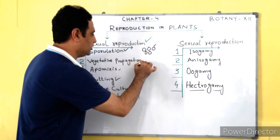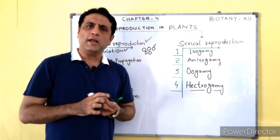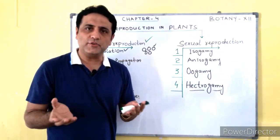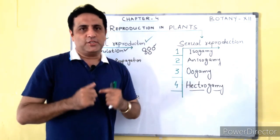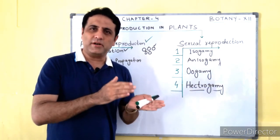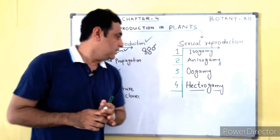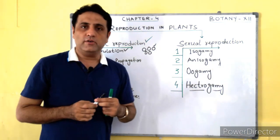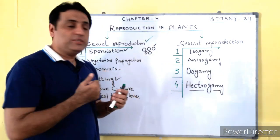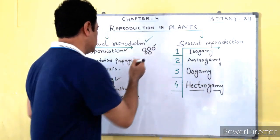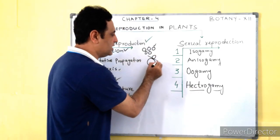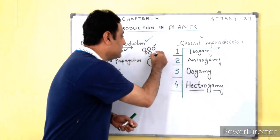The second type is vegetative propagation. When any plant part is separated from its parent plant and grows into another individual, this is called vegetative propagation — meaning any stem, root, leaf, or bud is separated from the parent plant and grows into another individual. For example, the potato is an example of vegetative propagation, in which a small bud is present on the outer surface of the potato.